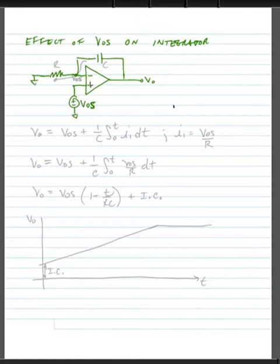We model the offset of the operational amplifier as an offset voltage outside of an ideal operational amplifier. We can figure out the output voltage by noting that because of the virtual short at the input, the voltage at this terminal is also equal to VOS.